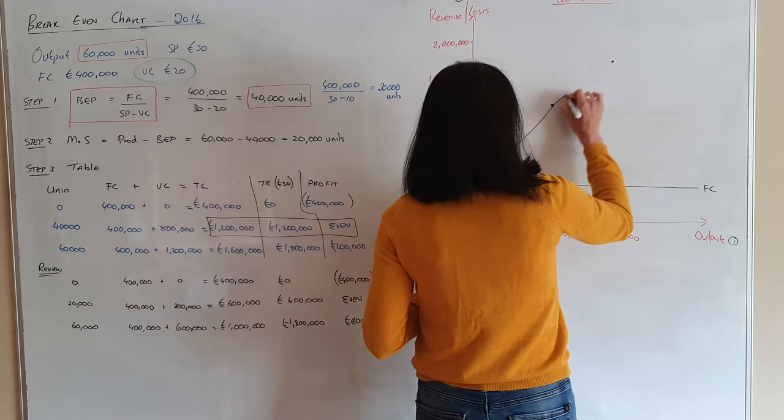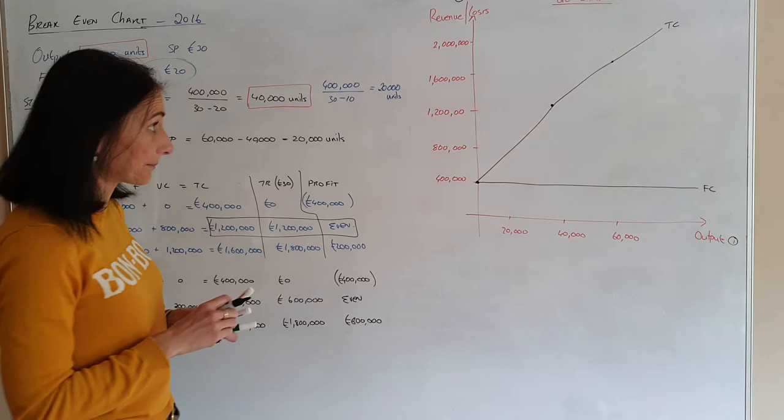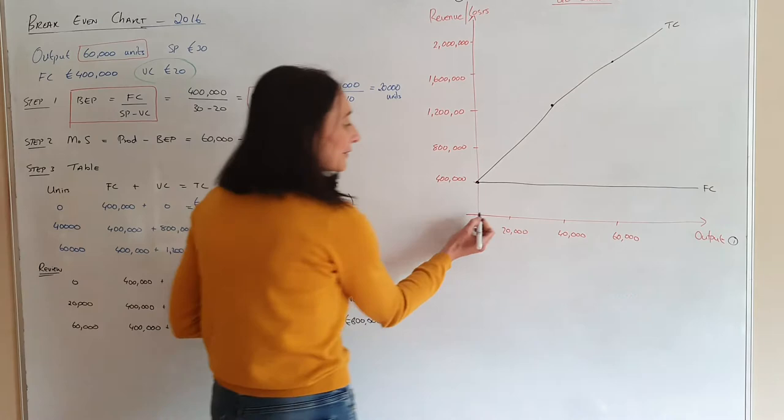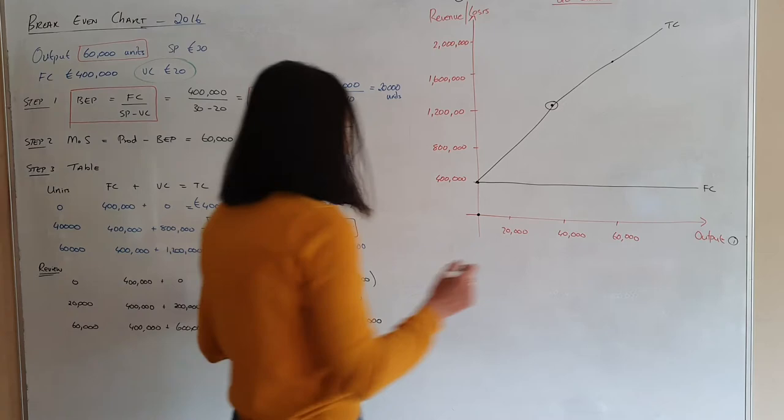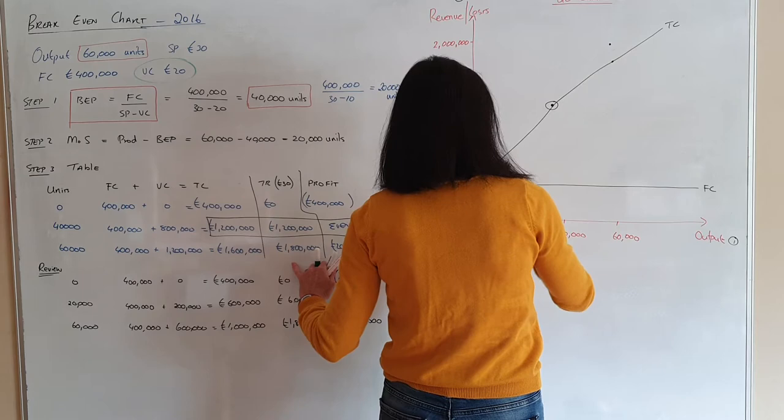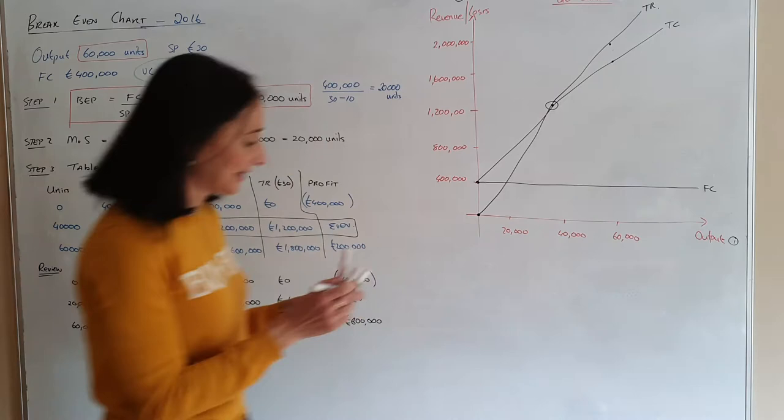You should be able to do that a lot neater than I can on the board here. Now your total revenue: remember if you don't make anything you can't sell anything, so your revenue starts at zero. At 40,000 units they should be equal because that's where we're breaking even. At 60,000 units our total revenue is £1.8 million. Excuse my graphs — the lines aren't going to be that straight on the board.